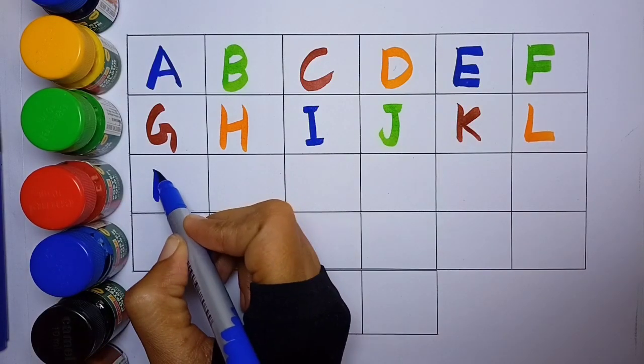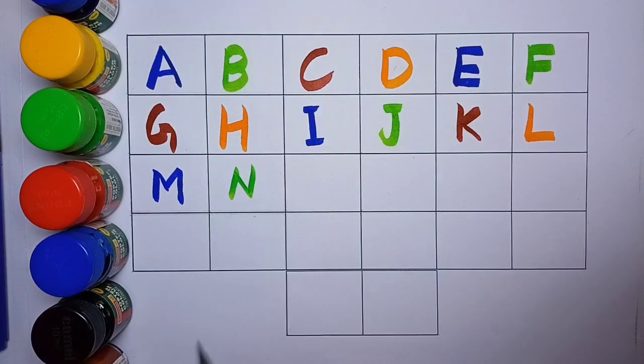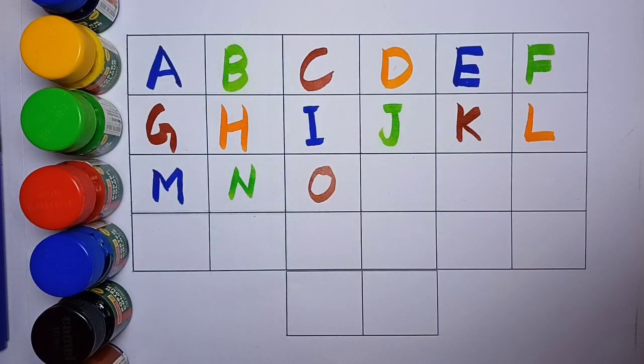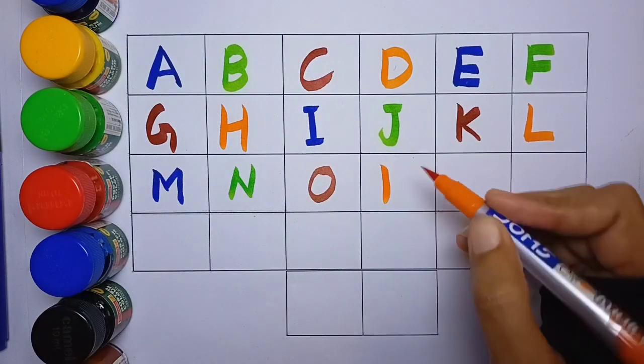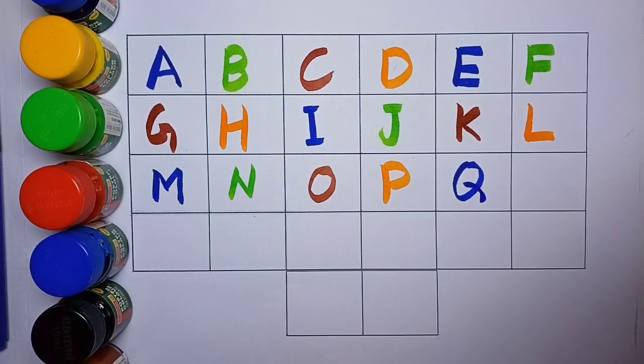M for mango, blue color. N for nest, green color. O for orange, brown color. P for peacock, orange color. Q for queen, blue color.